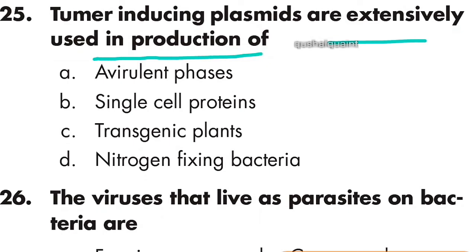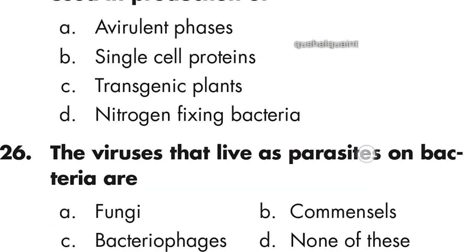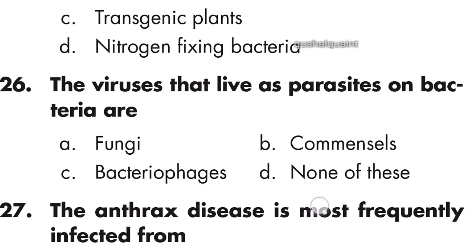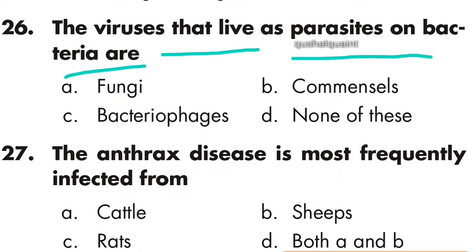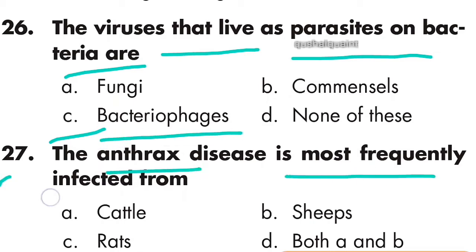Question 26: The virus that lives as a parasite on bacteria — these are bacteriophages, option C is correct. Question 27: Anthrax disease is most frequently infected from cattle and sheep both — option D, both, is correct.